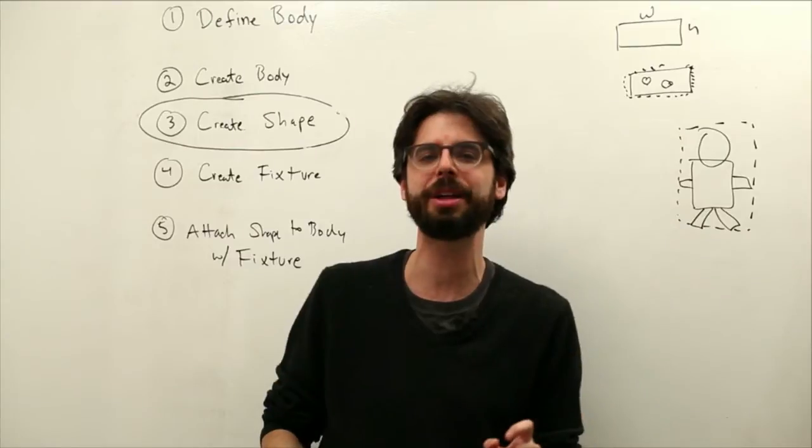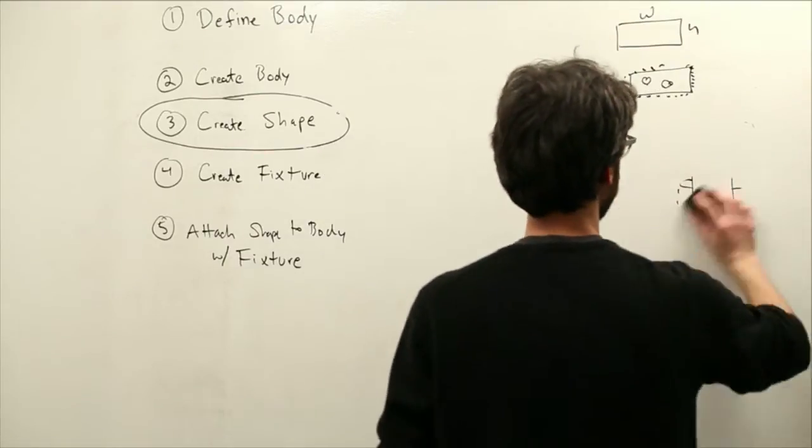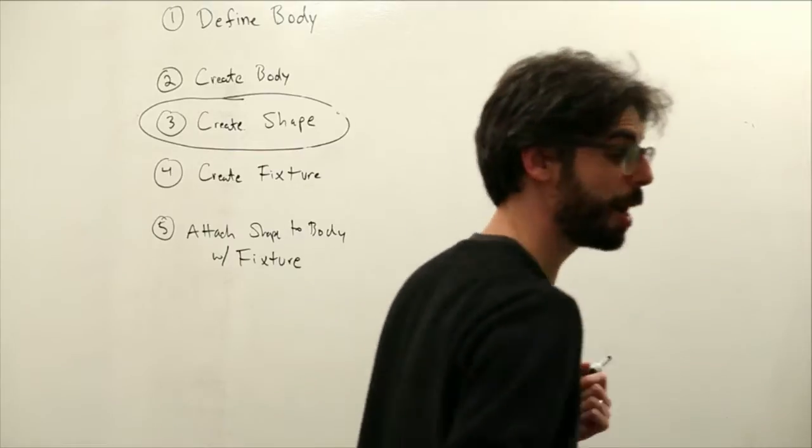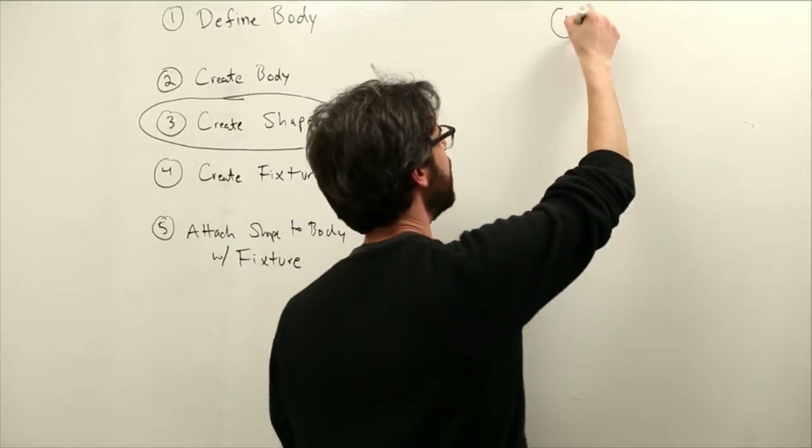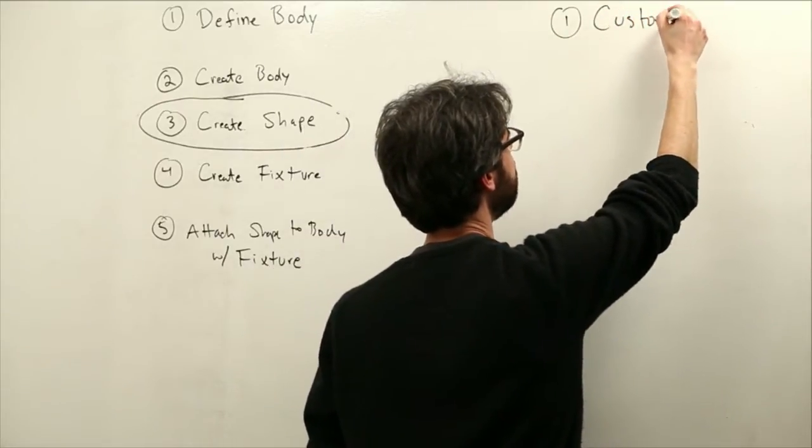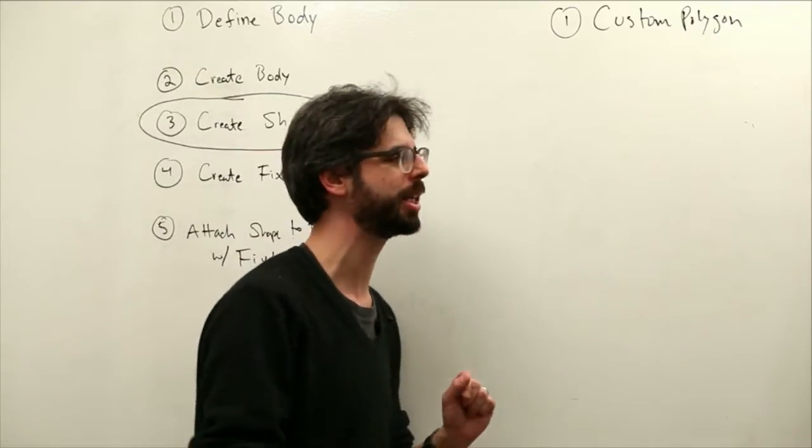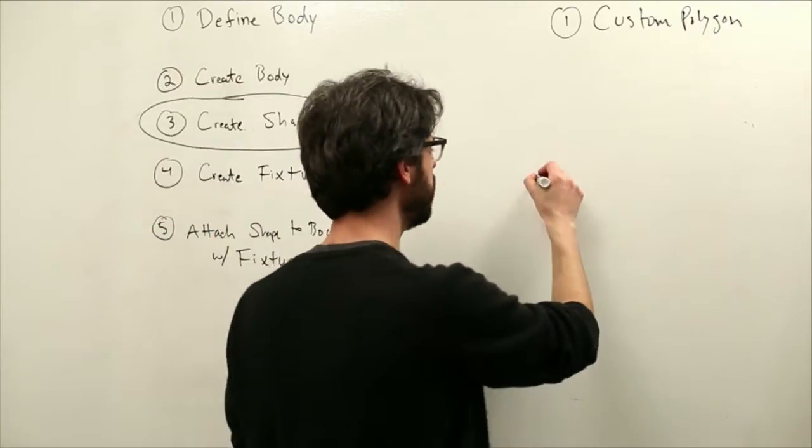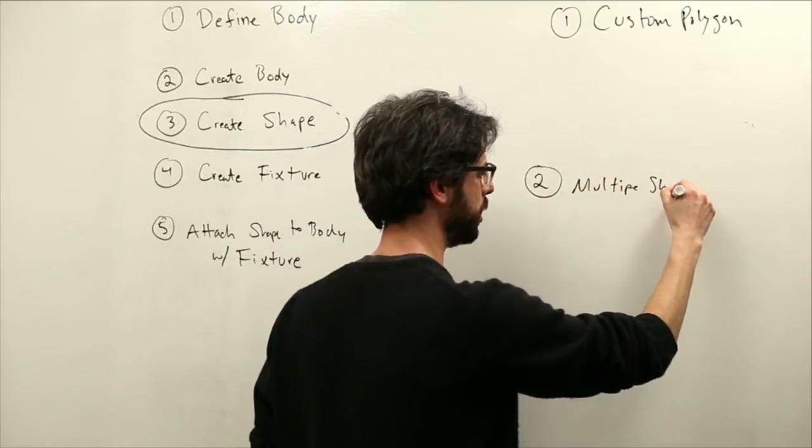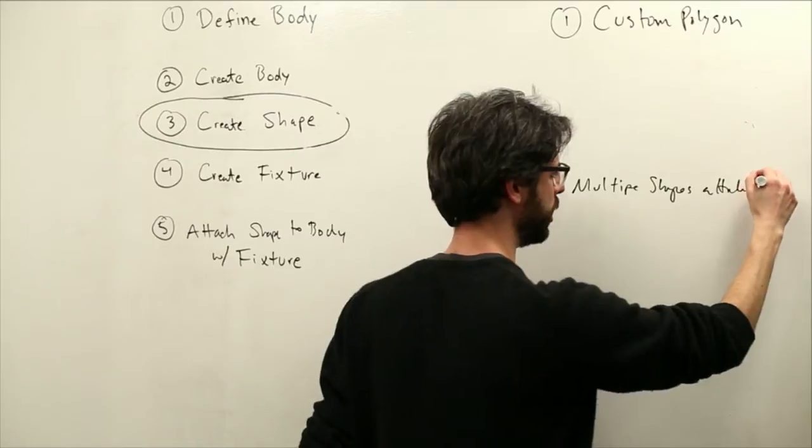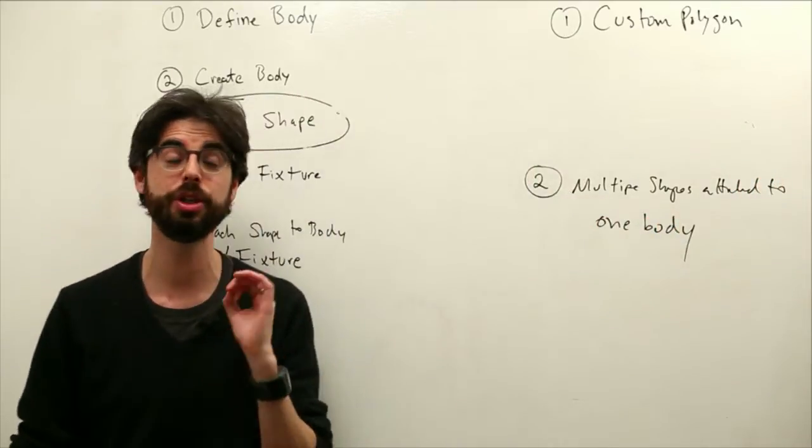But we could get much more specific about this and there are two ways of doing it. So the two ways that I'm going to describe and look at in a couple examples, one way is to set the vertices manually of a polygon shape. So I'm going to call that custom polygon. So that is strategy number one, we could create a custom polygon. Strategy number two involves multiple shapes attached to one body.